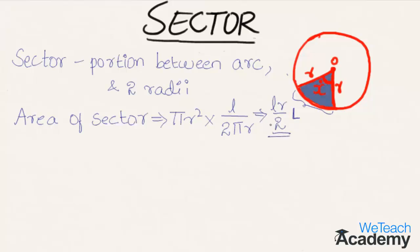We can also get the area of sector in degrees. The angle made by the sector is x degrees divided by the total angle of the circle, that is 360 degrees, multiplied by the total area pi R squared.